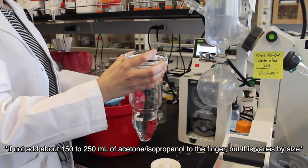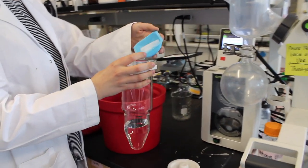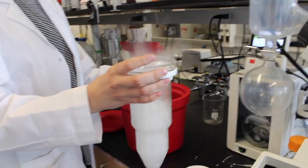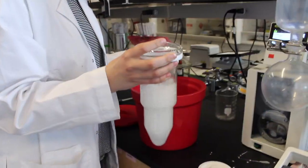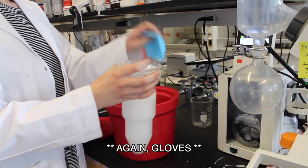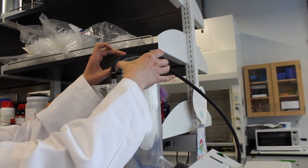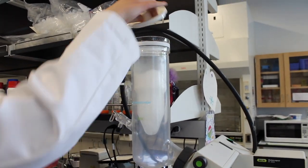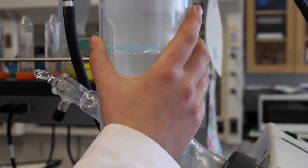There is no set amount of dry ice that you should add. Basically, just add enough so that it's cold. Due to sublimation, the dry ice will aggressively boil, so watch out for intense bubbling and splashing. Once you've confirmed that the finger is cold, either by observing obvious condensation on the outside of the finger or by touching it, you're ready to begin.